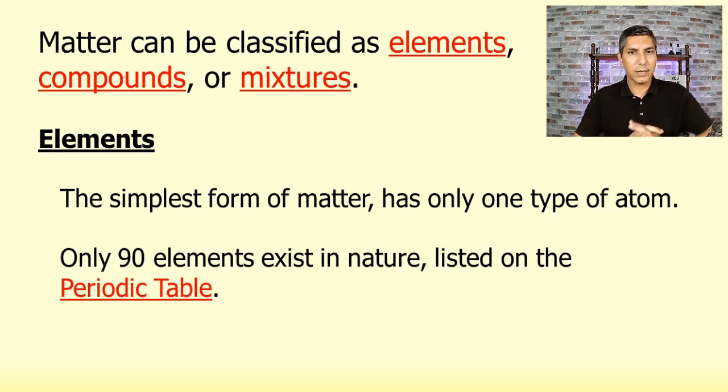Now you might look at your periodic table and say, well hang on a second, there are more than 90. There actually seem to be maybe about 118 elements on the periodic table. So what's going on with that? Well, the fact is there are another 28 elements that don't actually exist in nature and they're produced synthetically. They're actually produced in laboratories. And so that's why I don't have those counted as being in nature, although they certainly do exist as well.